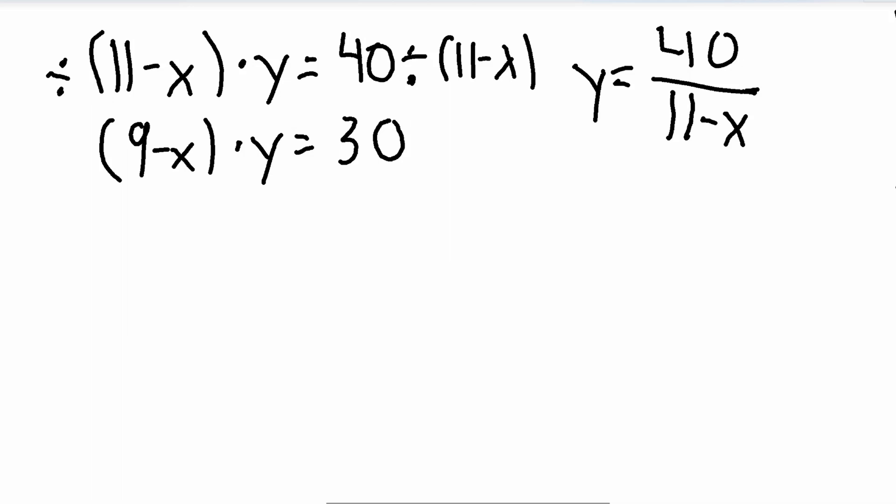So always when you have a variable in the denominator, you want to make sure that your variable does not make the denominator equal 0. Because if the answer to this question would make the denominator 0, we wouldn't be able to do that because the denominator is not allowed to be 0 when dividing. Because you can't divide by 0, right? So in this case, x would have to equal 11 for the denominator to be 0. So 11 minus 11 is 0. So let's just make sure real quick that the answer is not 11. So if we look here, we have 11 minus x equals 11 is 0 times y is still equal to 0 is equal to 40, which is not true.